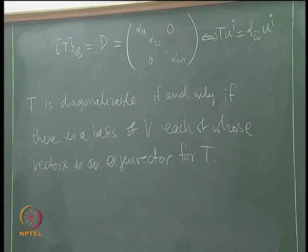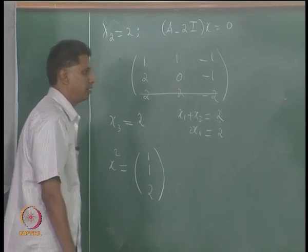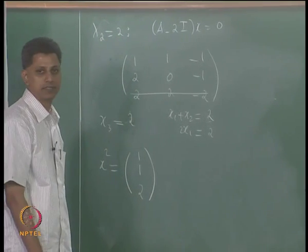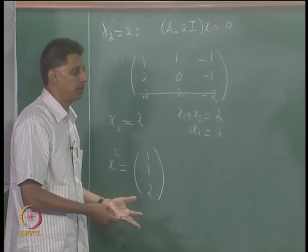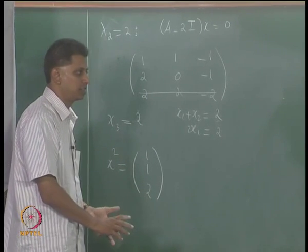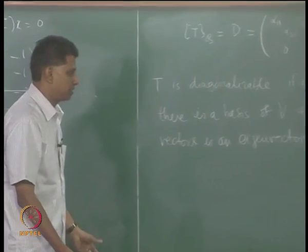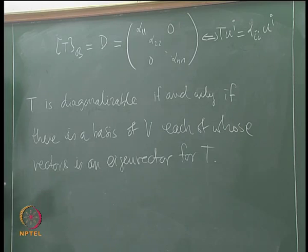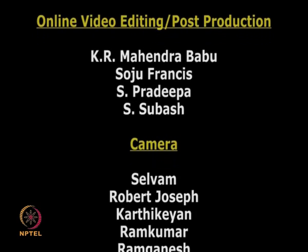Going back to the previous example, since we have only two linearly independent eigenvectors, the matrix A is not diagonalizable. Non-diagonalizability can come from two sources: one from the underlying field, and the other from the inherent nature of the transformation T. In the next lectures we will look at necessary and sufficient conditions for diagonalizability.